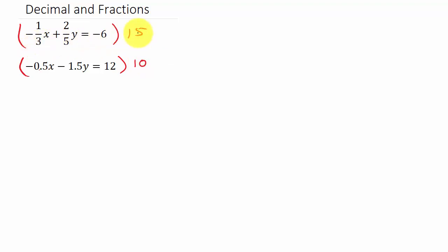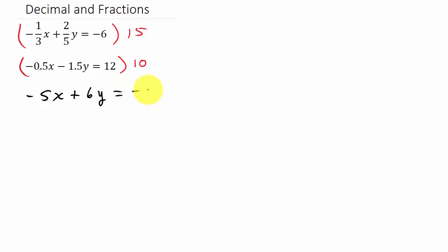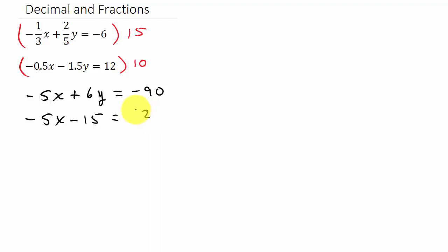So let's do that. 3 goes into 15 five times, so 5 times negative 1x is negative 5x. Plus, 5 goes into 15 three times, and 3 times 2 gives me 6y, and 15 times negative 6 is negative 90. Now let's multiply each term in the second equation by 10. Negative 0.5 times 10 moves the decimal one place to the right, so that's negative 5x, minus 15, and that equals 10 times 12, which is 120.